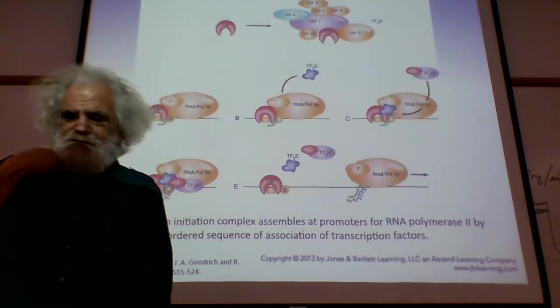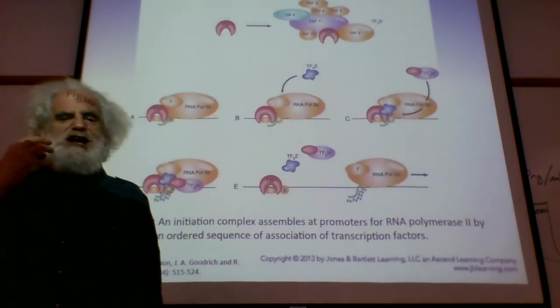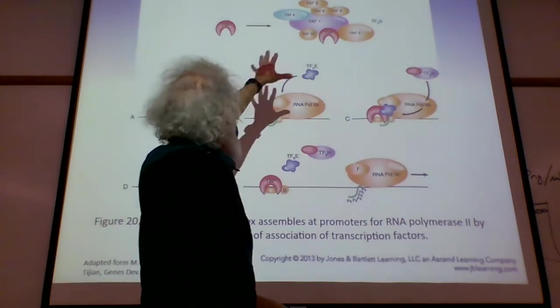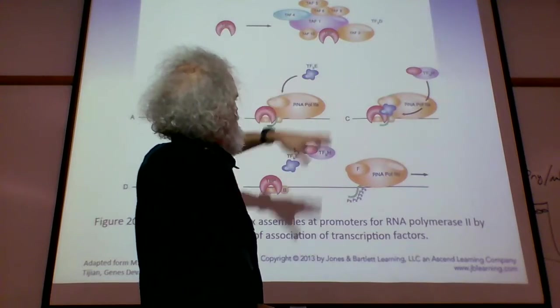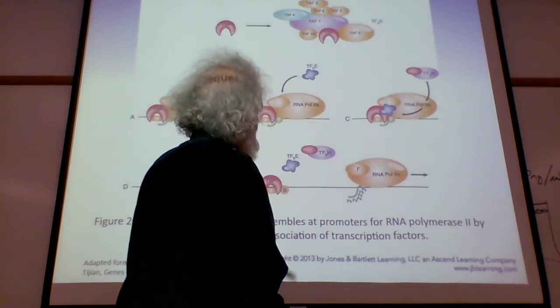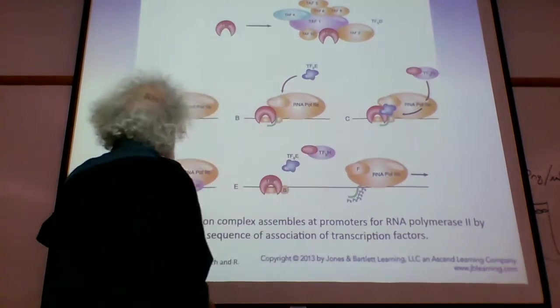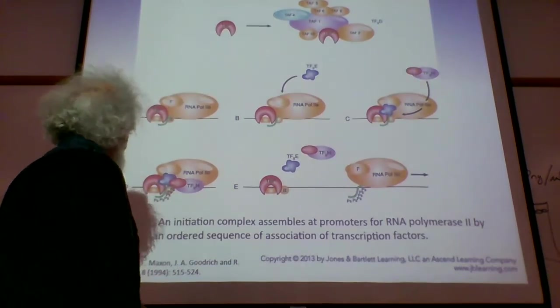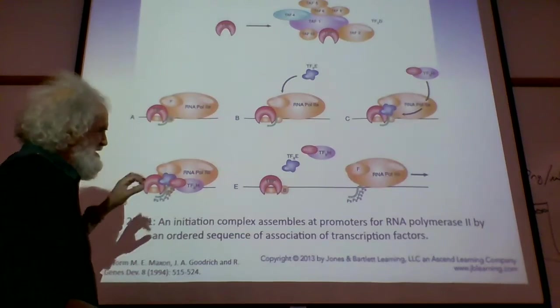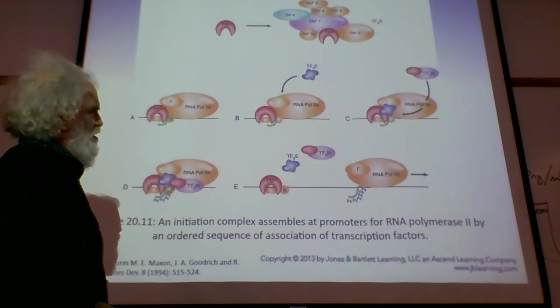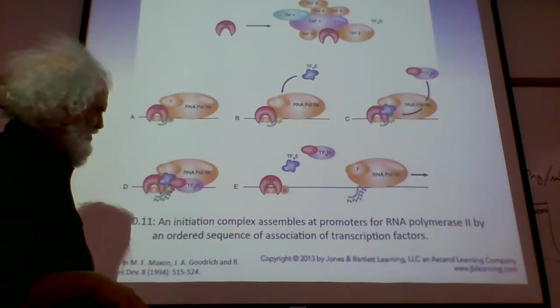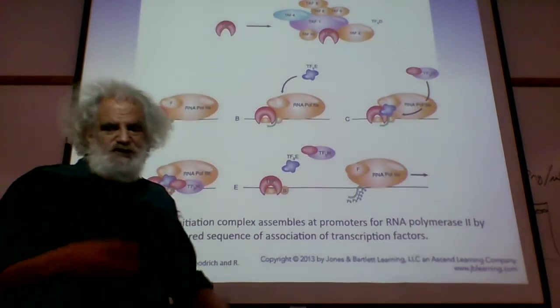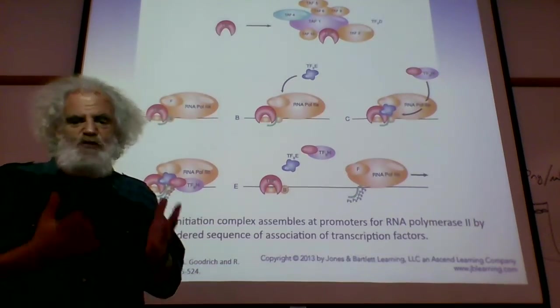We're establishing what is known as an initiation complex, and it is a whole set of these TFs. There's TF2D which is interacting, and then a number of other TF2s are coming in here. One of the things that starts to happen is there's a tail protein on the RNA polymerase that has to be phosphorylated, and that phosphorylation is essentially saying, 'Alright, you're set, you're ready to go, get moving.'